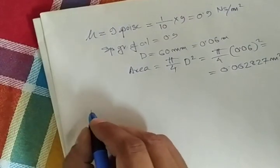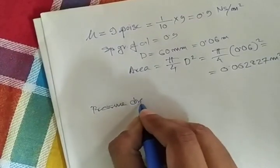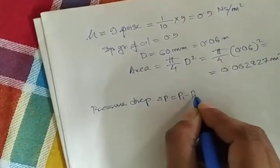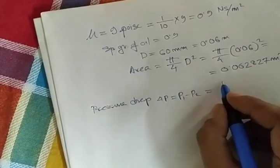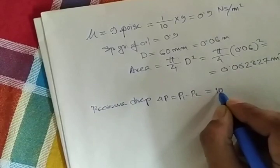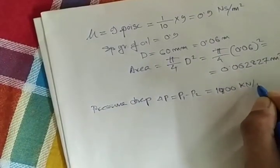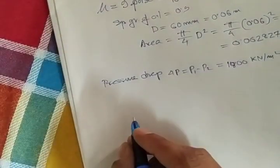Pressure drop, that is del p or p1 minus p2, is given as 1800 kilo Newton per meter square.